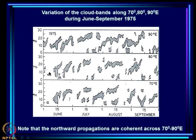If we look at just 1975 and look across the Indian longitudes, we see that these northward propagations are coherent across the longitudes.